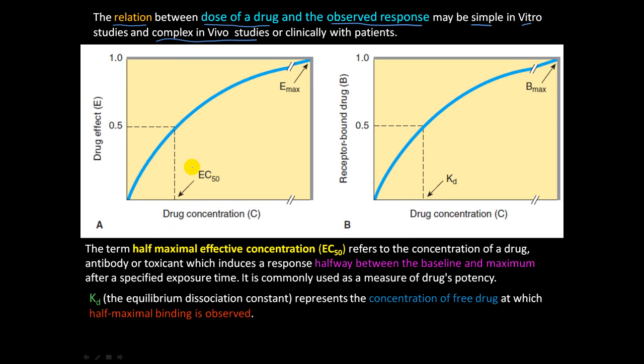Here is a graph of the drug effect versus the drug concentration, and we have this term EC50. We've already talked about this, but just as a reminder, the EC50 is right here - the concentration of the drug that is needed to get half of the drug effect.